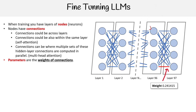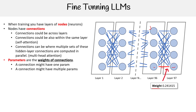Then we have parameters. Parameters are the weights of connections. On the right-hand side, we have a weight, and this weight is the representation of the connection between two nodes — that's going to be a value. A connection might have one parameter, but they can also have multiple parameters. For the number of nodes in each layer, they're going to connect to all the others in the next layer, and that adds up really quickly.